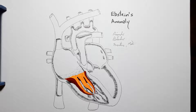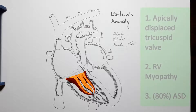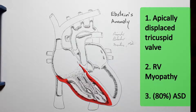Even though the apically displaced tricuspid valve is the cornerstone of Ebstein anomaly, it's also marked by other findings, such as fibrotic cardiomyopathy of the right ventricle.